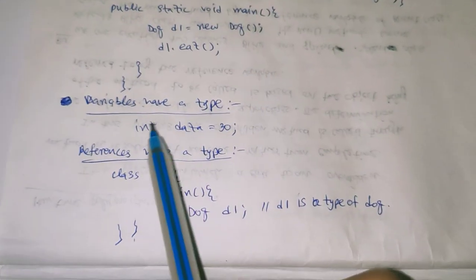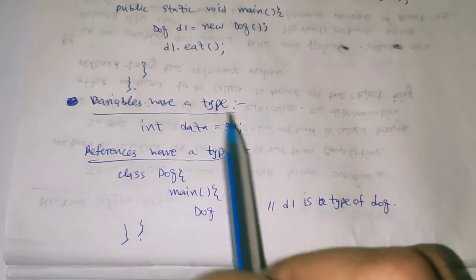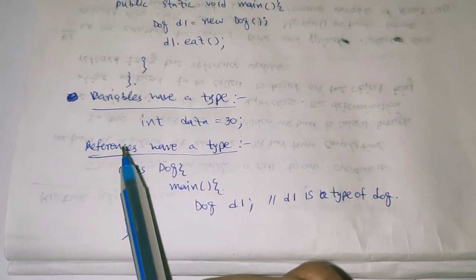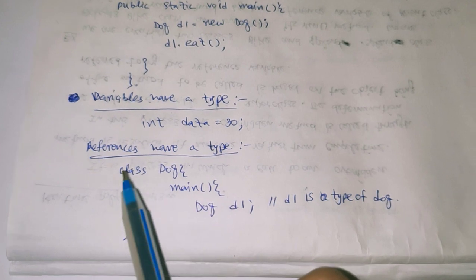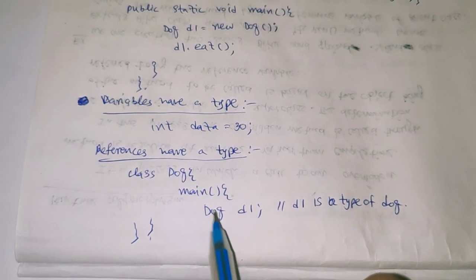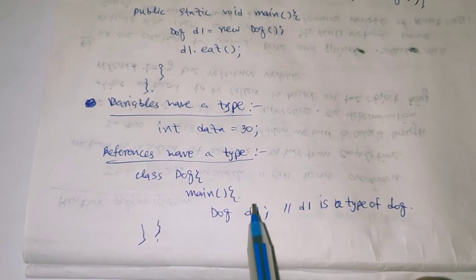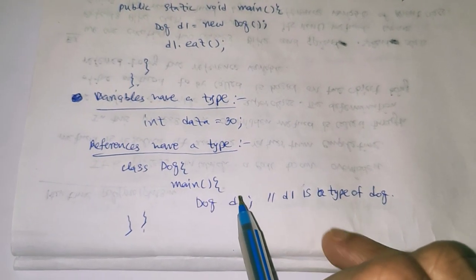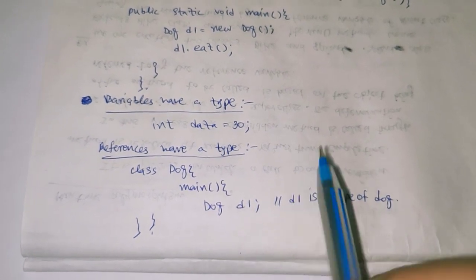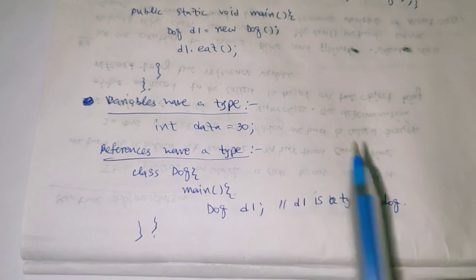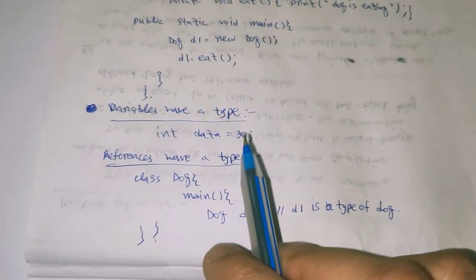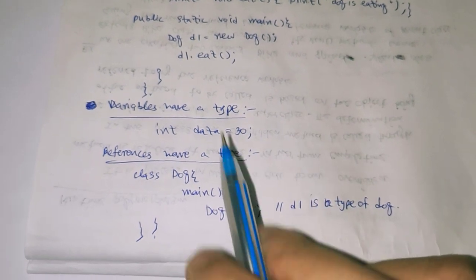For example, a variable with integer type — like data equal to 30 — the integer type of the data variable is known as the variable type. Next, a reference: inside the main method, 'Dog d1' means d1 is of type Dog. So 'Dog d1 = new Dog()' — d1 is the reference and Dog is the type of the object.